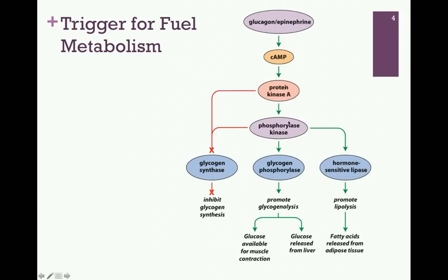Protein kinase A also activates phosphorylase kinase in order to stimulate glucose and fatty acid release. It does so by activating, first of all, glycogen phosphorylase, thereby stimulating the release of glucose from stored glycogen in the liver as well as the muscle. At the same time, phosphorylase kinase activates a hormone-sensitive lipase to release fatty acids from adipose tissues. Remember, everything is shifting in favor of fuel release and use rather than storage.